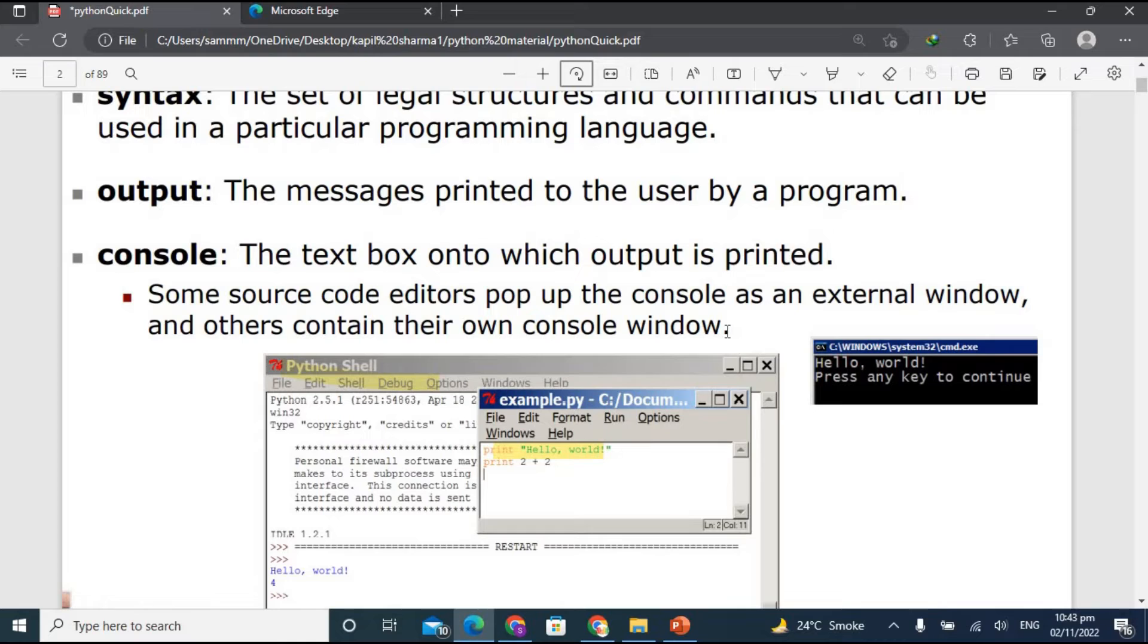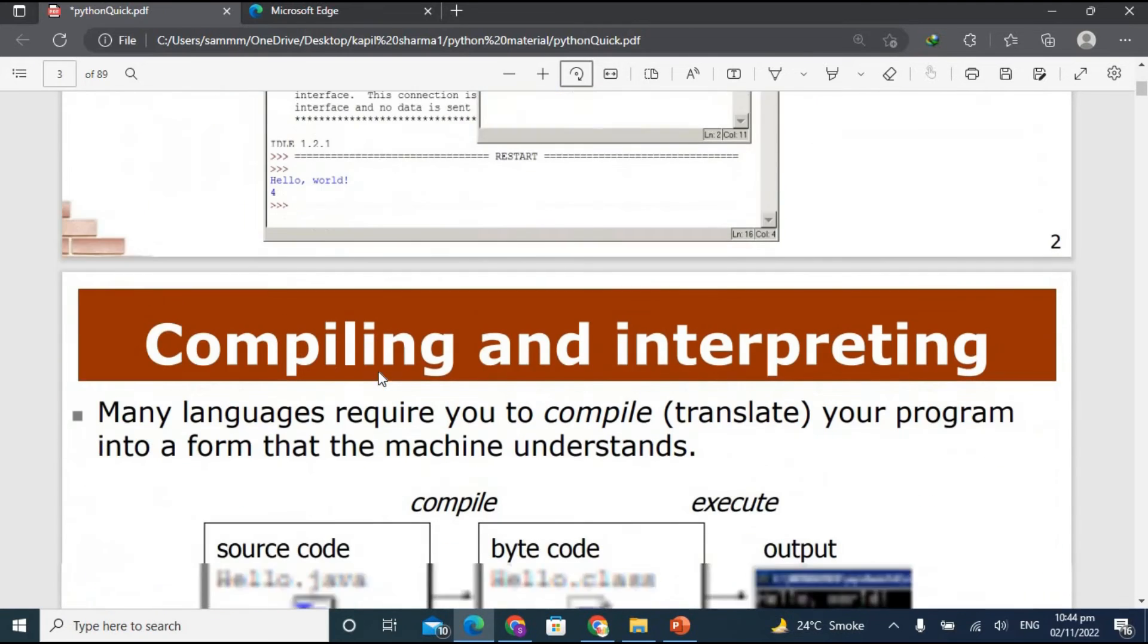Some source code editors pop up the console as an external window and others contain their own console windows. If you are a Python user, if you remember, there is a console option at the bottom of the code editor. We can open the console by clicking on that option. Like CMD is also a console, it's a separate console, and Python has its own console which is called Python shell.